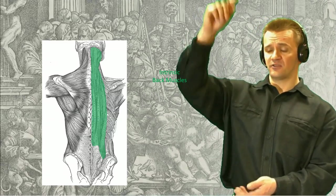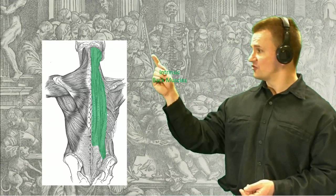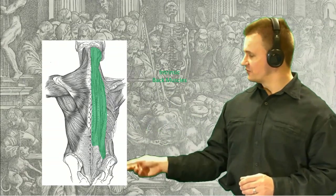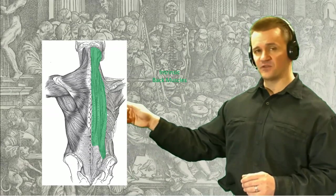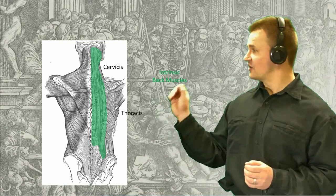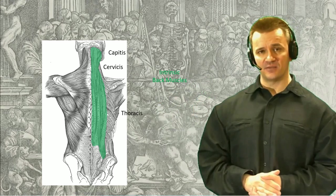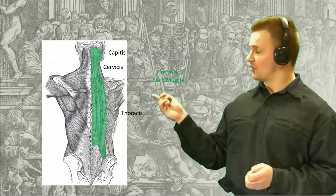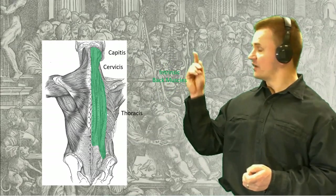Generally speaking, these muscles have a fairly unique design, whereas most muscles are composed of long, continuous muscle fibers that expand from origin to insertion. The intrinsic muscles tend to be discontinuous, with a series of shorter muscle fibers spanning a few spinal segments grouped together to form a unifying muscle belly. As a result, many of these muscles can be subdivided into thoracic, cervicis, and capitis segments, depending on the specific attachment point on the thorax, neck, or head regions, respectively.